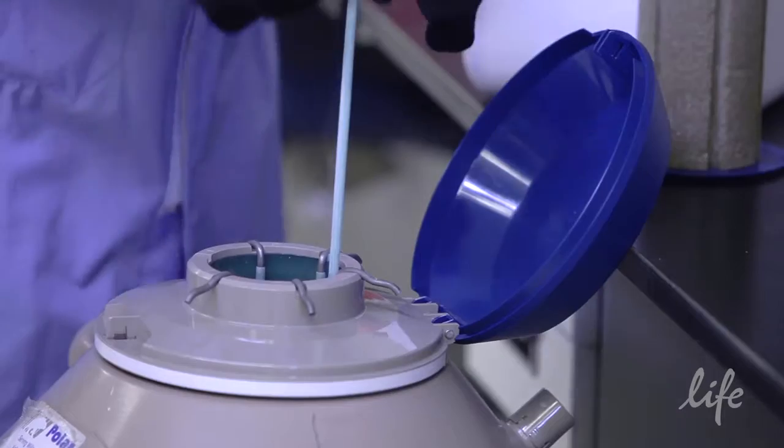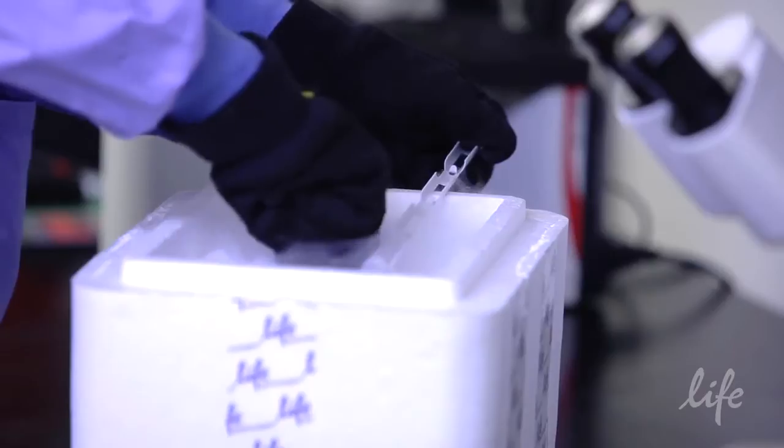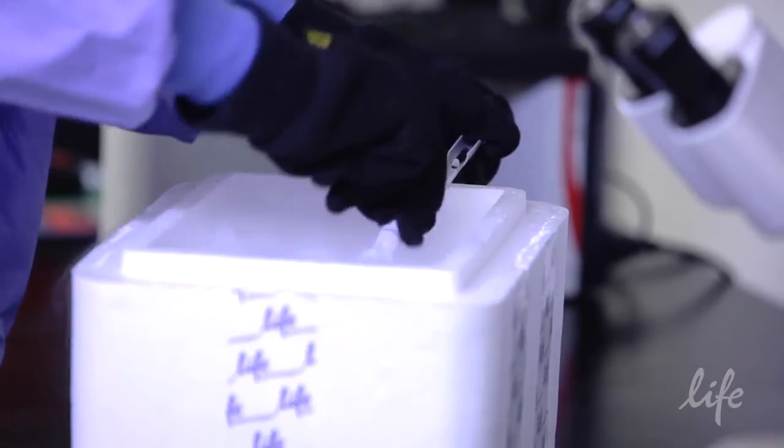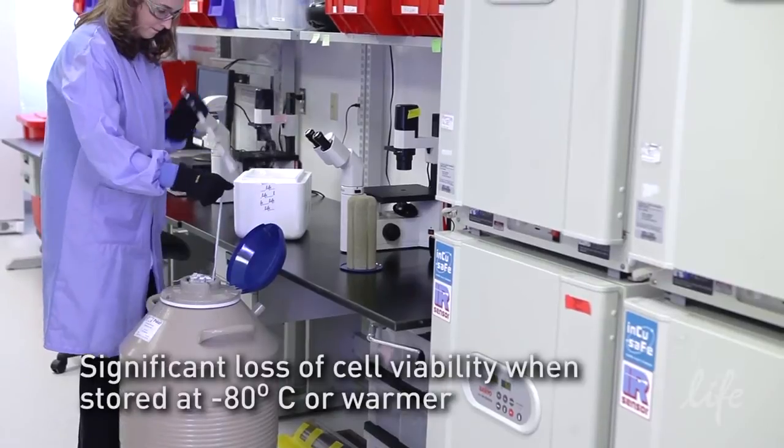Cryopreserved primary cells can be stored in the liquid nitrogen vapor phase for greater than two years with minimal loss in viability. Storage at minus 80°C or warmer will result in significant loss of cell viability.